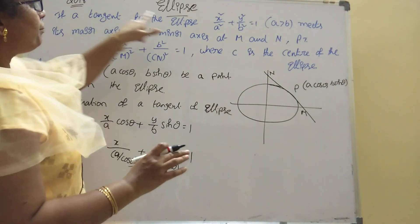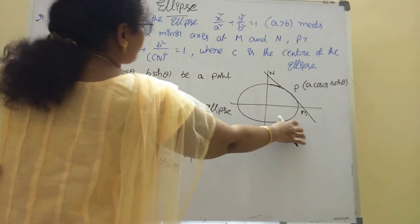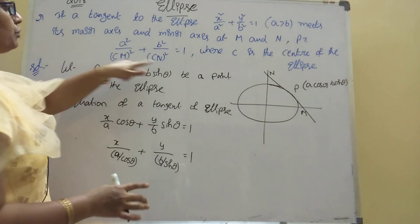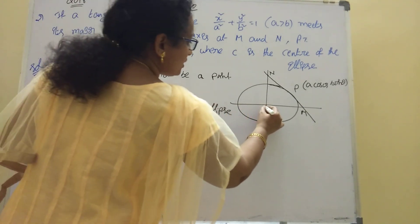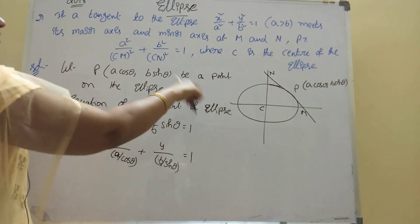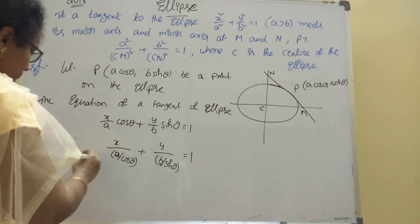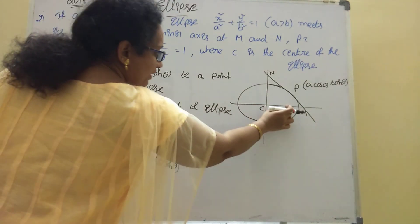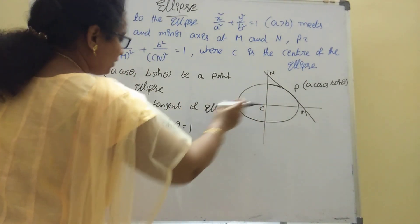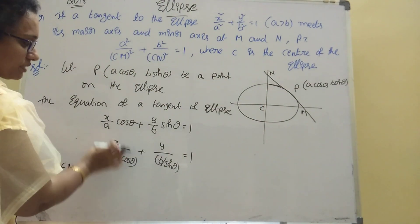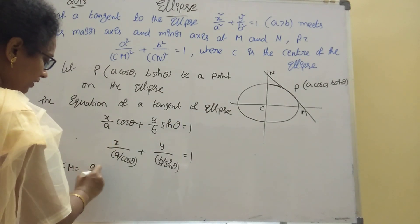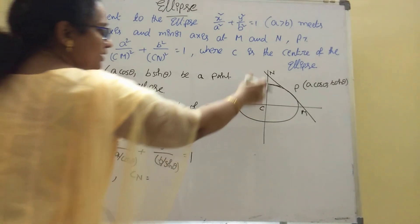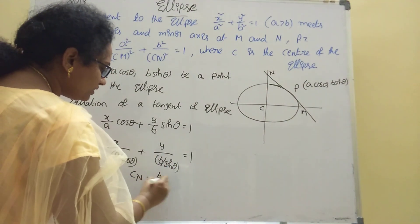This tangent meets the major axis at M and the minor axis at N. Using intercept form, the x-intercept is a/cosθ and the y-intercept is b/sinθ. So CM = a/cosθ and CN = b/sinθ.